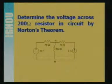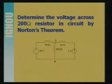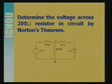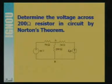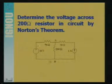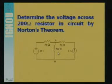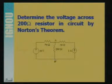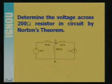Determine the voltage across the 200 ohm resistor in the circuit by Norton's theorem. Here this is a network having a voltage source of 10 volt, a current source of 1 ampere, and resistances. By Norton's theorem, across terminal AB, we can change this whole network into a single current source and a parallel impedance, and then connect the 200 ohm again to find out the voltage across it. First, we have to make the Norton equivalent circuit from this complicated network across terminals A and B.